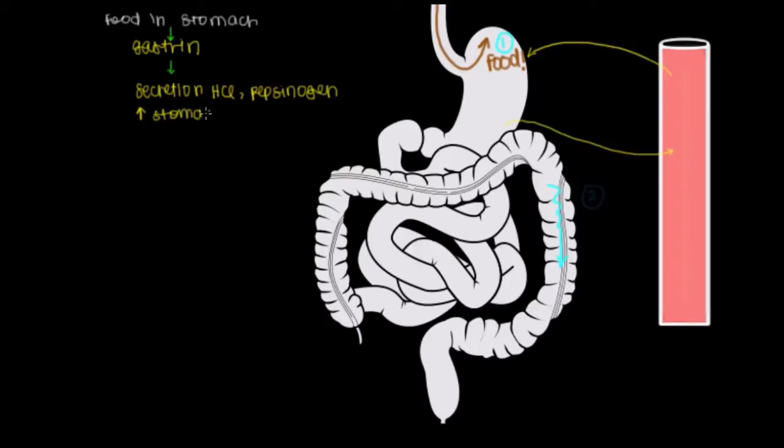The other thing that gastrin does is that it increases stomach motility. Remember that one of the functions of the stomach is to churn food that's present. It's not just to release acid and pepsinogen that's going to digest food. It also physically breaks down the food. So we result in something that's called chyme.